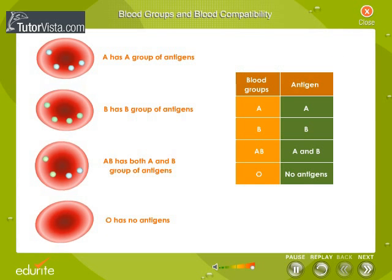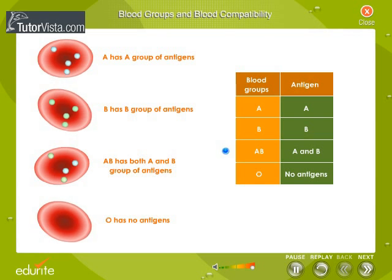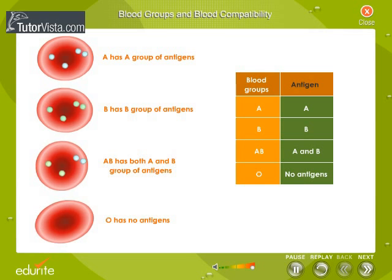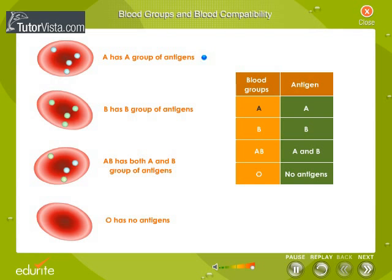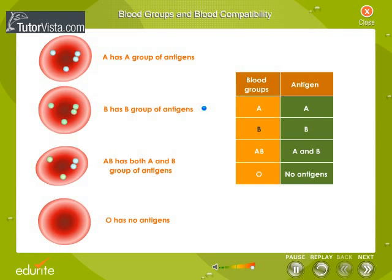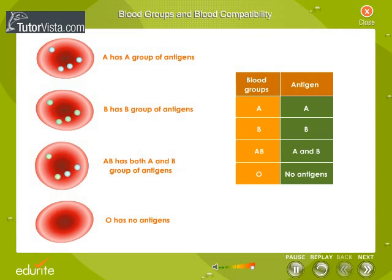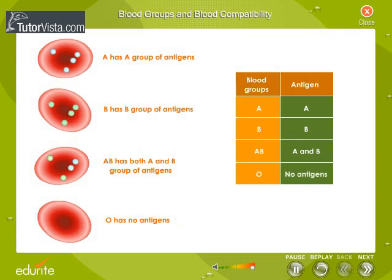The four types of blood groups are A, B, AB, and O. These letters refer to the antigen present in the red blood cell. A group has antigen A, B group has antigen B, AB group has both antigens A and B, while O group has no antigens in the red blood cells.